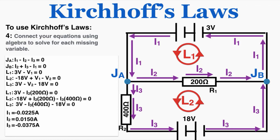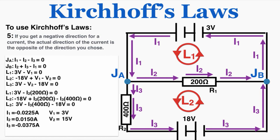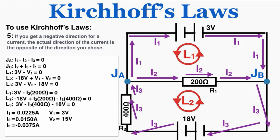Now that we have the current values, we can calculate voltage drops: V1 = I1 × R1 = 3V, and the voltage drop across the second resistor is 15V, equal to I3 times R2. Step 5: if you get a negative value for a current, the actual direction is opposite to what you chose. I1 and I3 were negative, so their actual directions are reversed, while I2 was correct. Flipping I1 and I3 gives us an exact map of current, voltage, and resistance throughout the entire circuit.